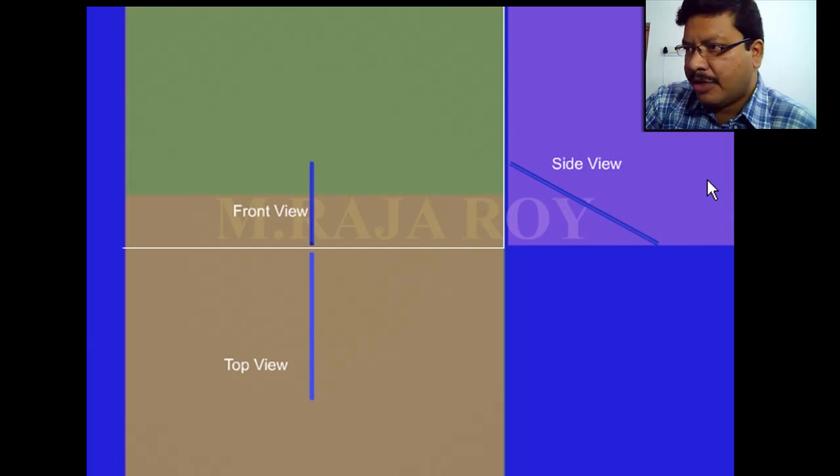Then to get the front view you draw the projector like this. Two projectors from this point and this point you will get the front view. But to get the top view you draw an arc like this.